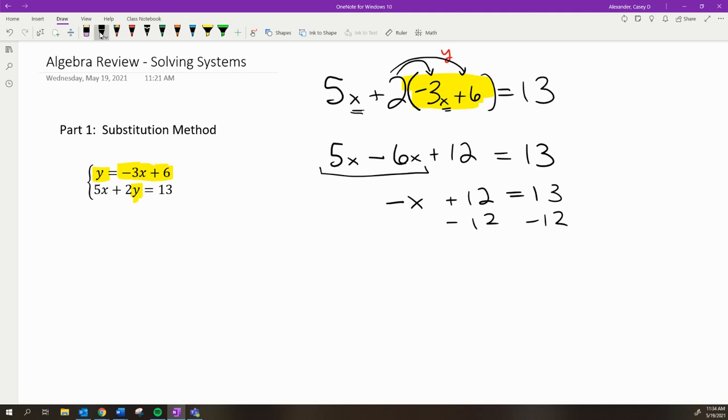You probably can see the answer coming. 13 - 12 = 1, but this says -x = 1. To get rid of that negative sign, we divide by -1, because a negative divided by a negative is positive.